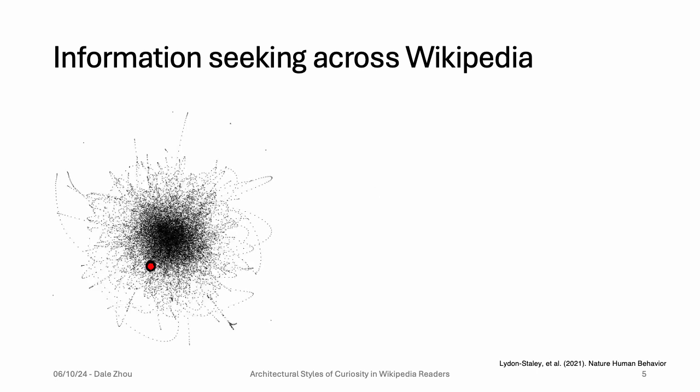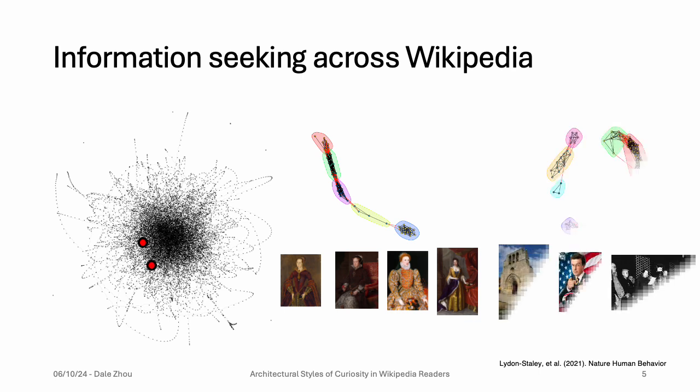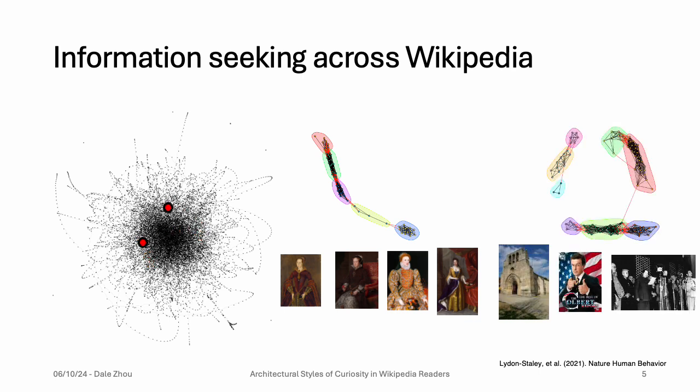So what are the styles of curiosity we identified in the lab? When people browse Wikipedia, we are thinking of them as filling in a subnetwork atop this underlying Wikipedia hyperlink network, depicted in black here. As they traverse the nodes and edges, they create their own individualized networks. They could traverse it tightly, such as by visiting pages about the Queens of England and their lineage — we're calling this hunter-like curiosity. Or they could jump around more loosely, such as by visiting pages about landmarks, media, and politics — we're calling this busybody-like curiosity.